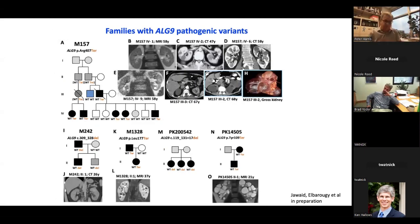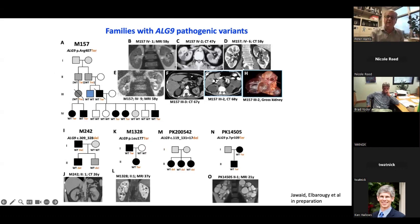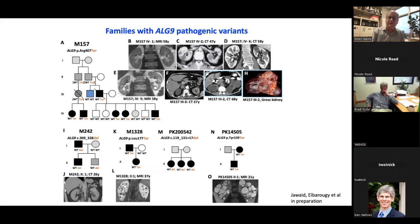For ALG9, we identified a number of families, including this large family from Mayo that was also unlinked to PKD1 and PKD2 by linkage analysis many years ago. The disease is pretty mild in these individuals, with a few cysts mainly in the kidney. Interestingly, the individual with quite large cysts in an unusual presentation was found not to have changes in ALG9, which shows the complication of looking at linkage and segregation with genes that have a milder presentation.